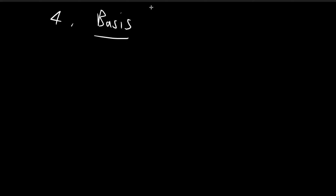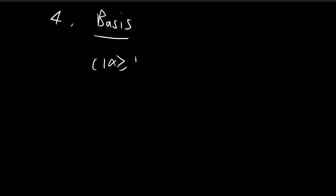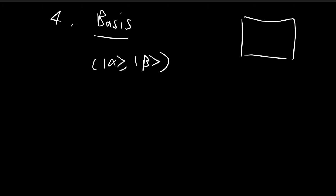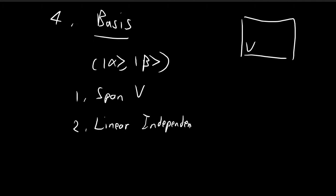The fourth concept is basis, which is closely related to span. If I have a set of vectors — say alpha and beta — from vector space v, and these vectors first span v and second are linearly independent, then this set of vectors forms a basis of that vector space.